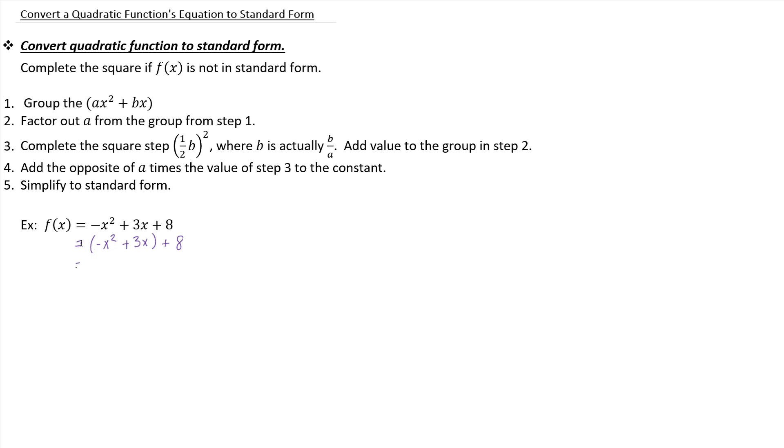Then you want to factor out your leading coefficient a from the group that you just made. In our case that's a negative 1, so we want to pull that out from our parenthesis set. When we do that it divides out. Divide by negative 1 and you're left with x squared minus 3x.